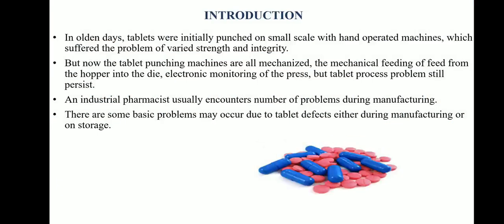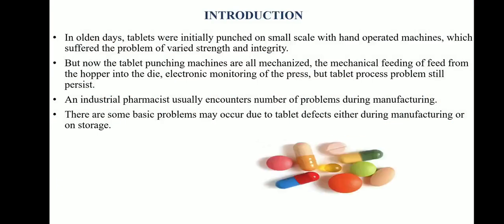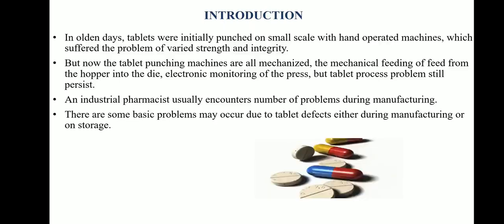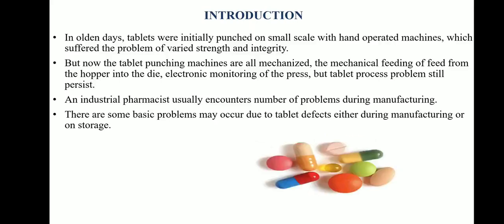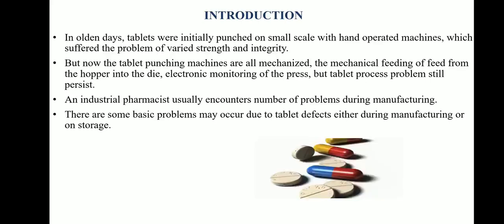In olden days, tablets were initially punched on a small scale with hand-operated machines, which suffered the problem of varied strength and integrity. But now the tablet punching machines are all mechanized, like the mechanical feeding of feed from the hopper into the die and electronic monitoring of the press, but tablet process problems still persist.